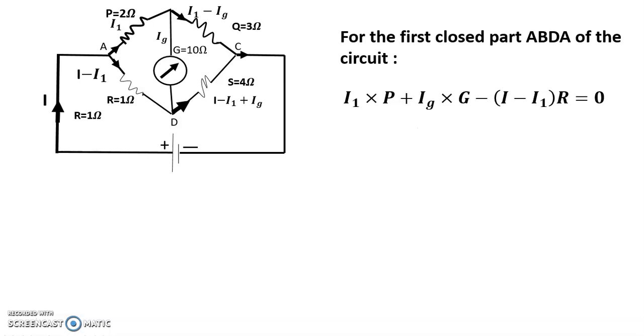Kirchhoff's first rule says that it states that the algebraic sum of the current meeting at a point in an electrical circuit is always zero. This is the algebraic sum of the closed circuit. It says meeting at a point. Kirchhoff's first rule, I1, so it is I minus I1, so it is I1. It is I minus I1, it is I. So if I can add then it is zero. And this is Kirchhoff's second rule: algebraic sum of the products of resistance. So it is the product of the resistance with current. So it is zero. You can see this closed loop. This is ABDA.